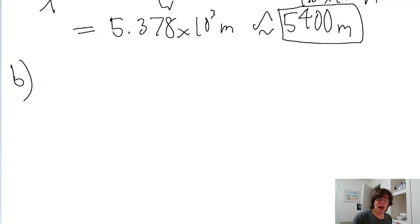Part b asks about how much time it takes to scan the disk if it's moving at a speed of 1.2 meters per second. And this is a pretty basic part of the problem. So if we already know that we have a path length of 5.378 times 10 to the power of 3 meters,